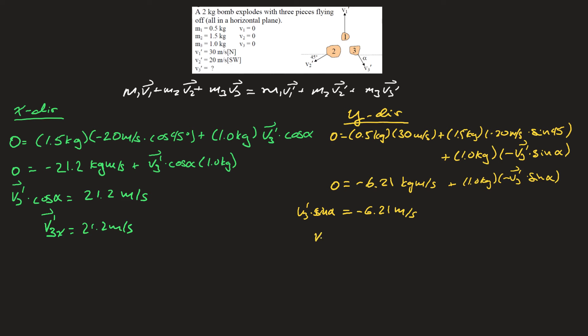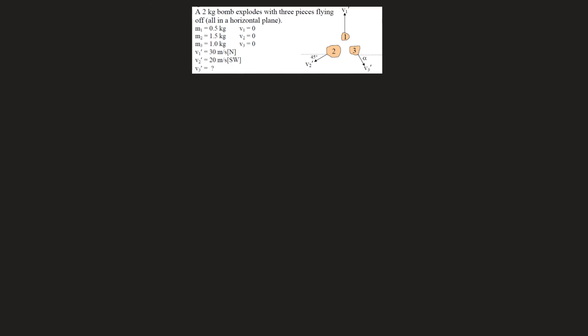And make note that this is actually v3y prime, negative 6.21 meters per second. Let's recall what I ended up solving for. That was v3 prime times cos alpha, which was also v3x prime, and that was equal to 21.2 meters per second.